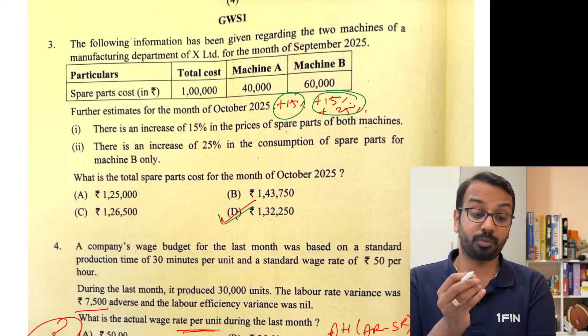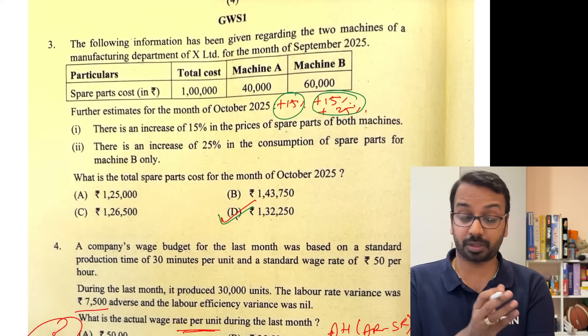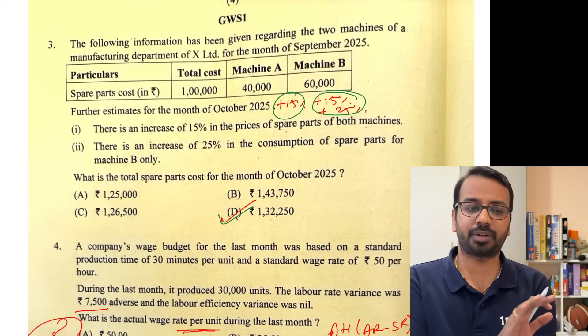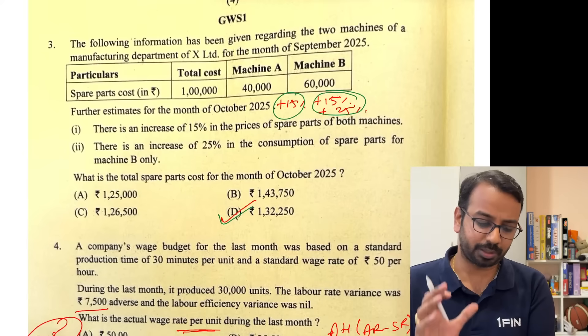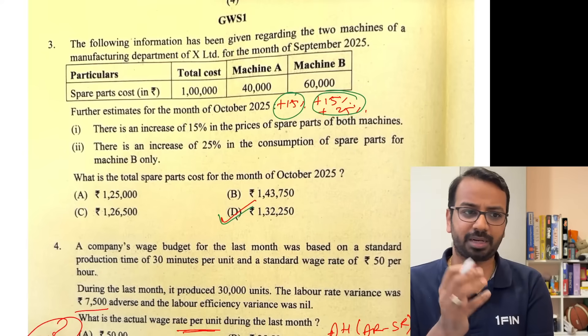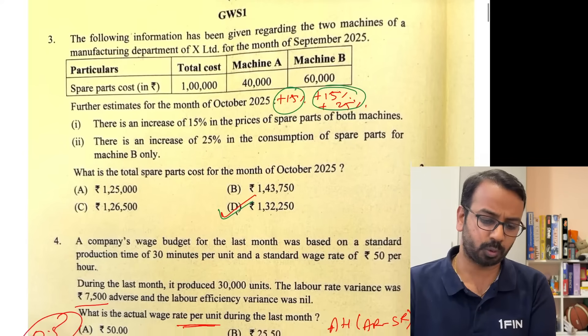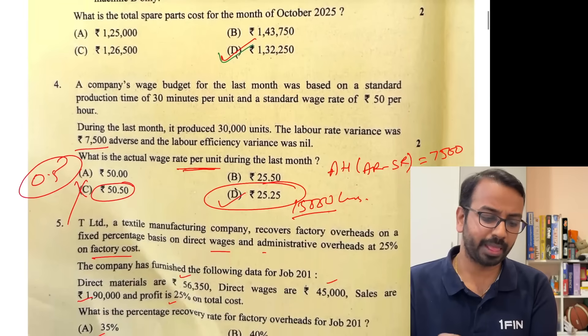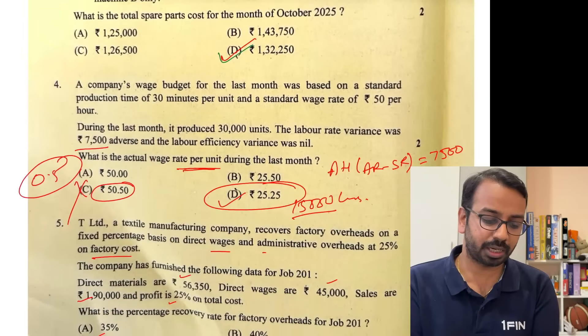Students, if any of your answers are different or you have taken some other assumption, you can let me know in the comments and I'll be more than happy to address them. Then the wage question — efficiency variance is nil and the rate variance is 7500.